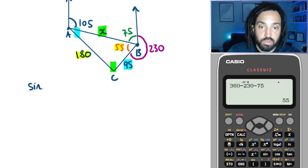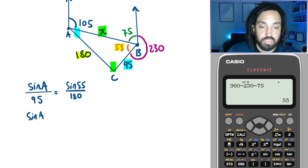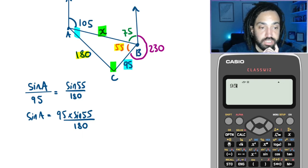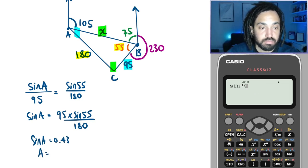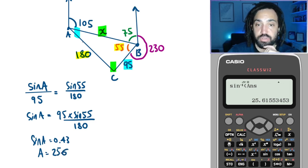So I'm going to find sine of capital A, which is this blue angle here, over its opposite side 95, is equal to the pair that we have, so sine 55 over 180. So sine capital A equals 95 times by sine 55 over 180. Okay, so 95 times by sine 55 over 180. Okay, that gives us 0.43. And then, of course, to work out A, we just do sine to the minus 1. And we get 25.6, which looks about right. See, it looks like a very acute angle. Great.